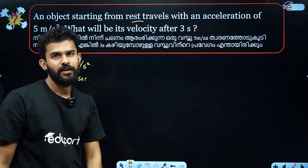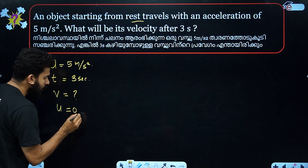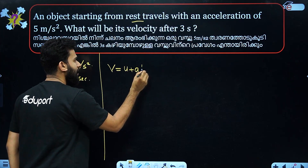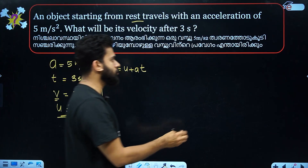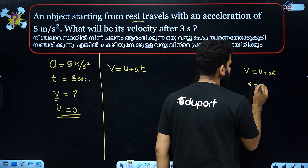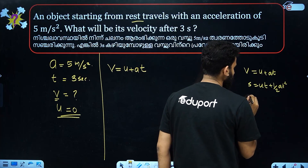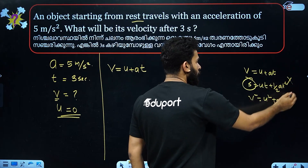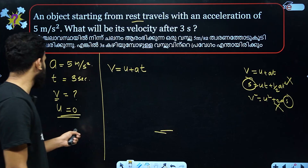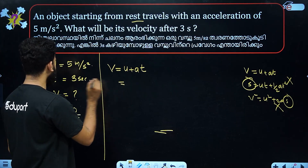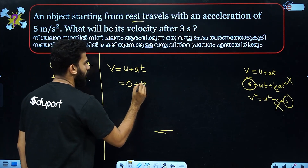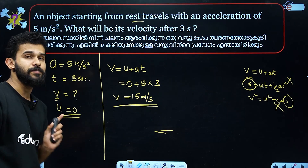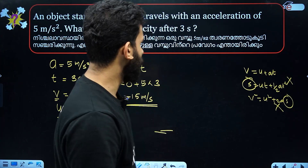Starting from rest, the initial velocity u is zero. Using the equation v = u + at: a is 5, t is 3, so v = 0 + 5 × 3 = 15 meters per second. That is the velocity after 3 seconds.